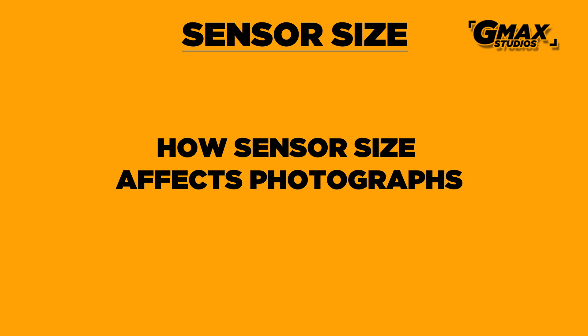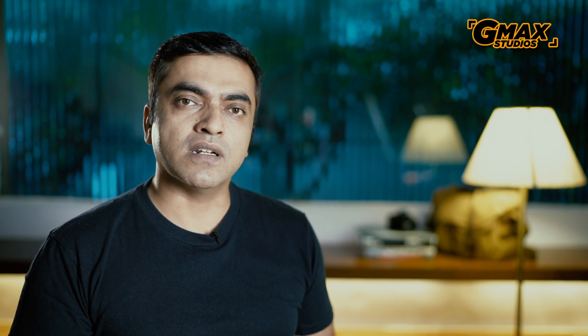Now the question is: how does sensor size affect our photographs? Before we get into that, let us understand what an image circle is. The image that the lens projects onto the sensor is called the image circle.